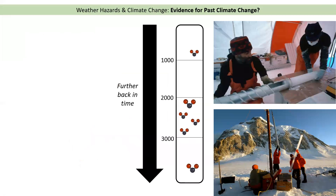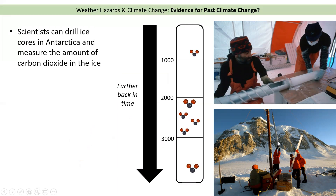The first piece of evidence for climate change is something called ice cores. You can see what they look like in the pictures — they're long tubes of ice that can be dug up from Antarctica. Scientists go to Antarctica and drill out these very long pieces of ice. The further down in the ice you go, the further back in time you go, because the ice has built up over many many years.